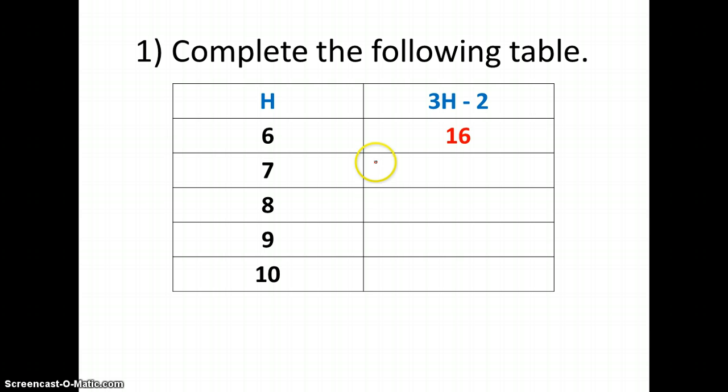For the next one, I would do 3 times 7 minus 2, and 3 times 7 is 21 minus 2, 19. To do 8, I would do 3 times 8 minus 2, and 3 times 8 is 24, minus 2 is 22.